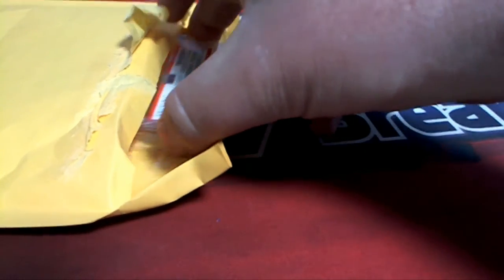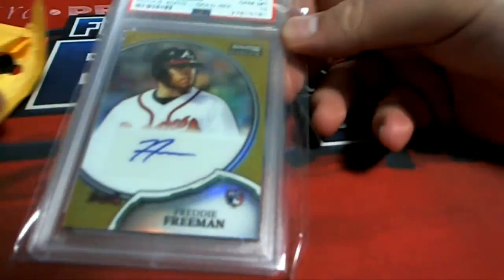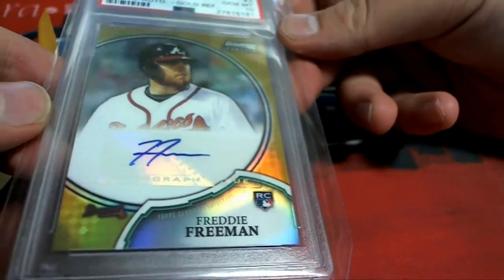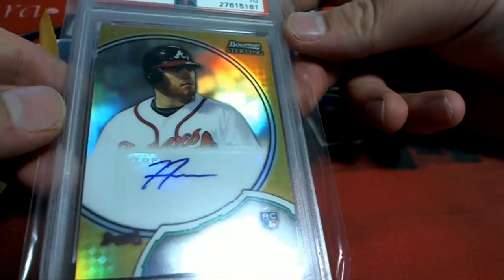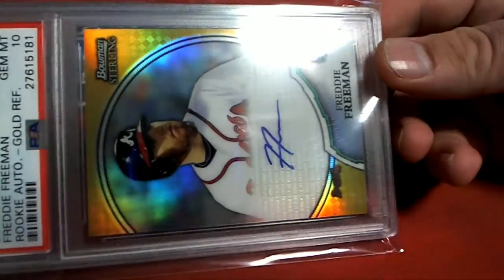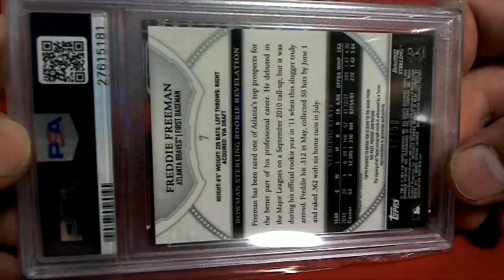Oh, Gem Mint 10, nice! 2011 Bowman Sterling Freddie Freeman. Freddie Freeman's a beast, rookie card. Gem Mint 10 Gold Refractor, look out! Gem Mint 10 Gold Refractor. 12 of 50, by the way. 12 of 50, that's nice.